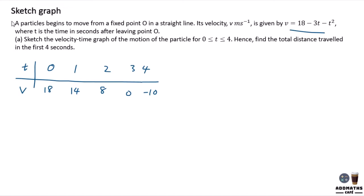So in this case, by sketching the graph here, this is your velocity, this is your time. So 0, 1, 2, 3, and 4. When t is 0, it will be velocity 18.